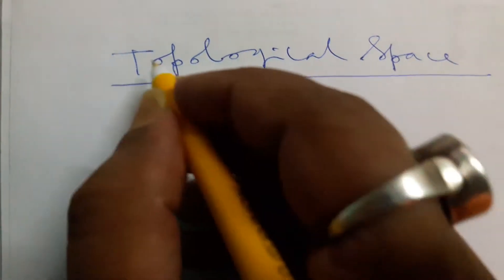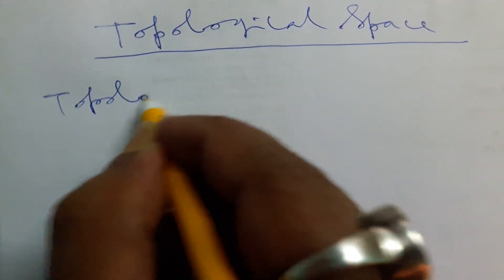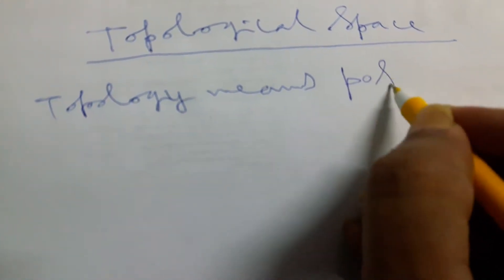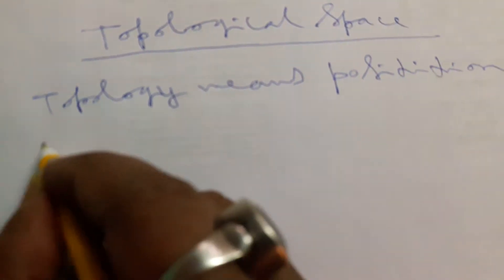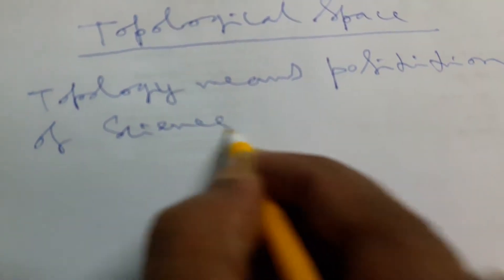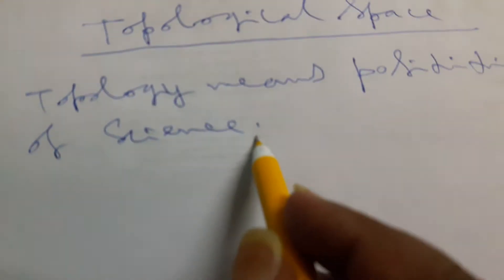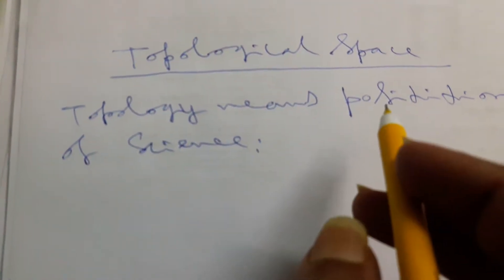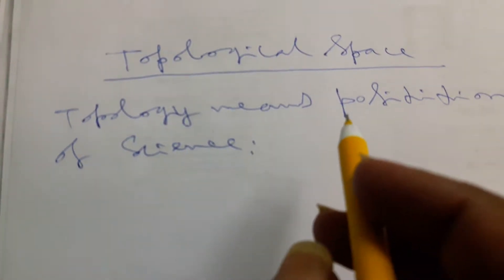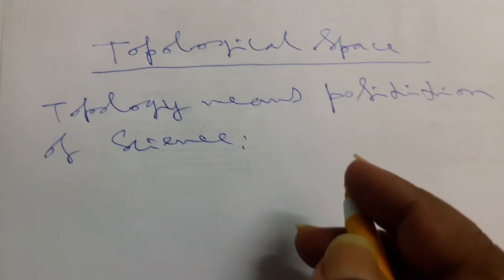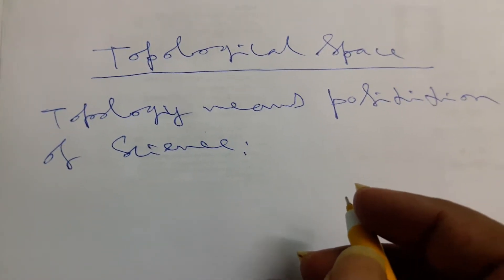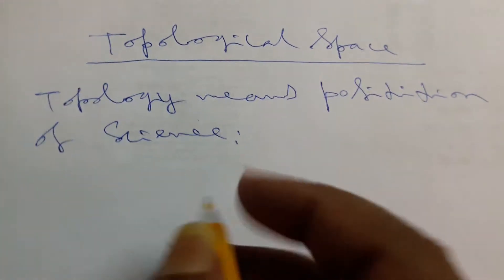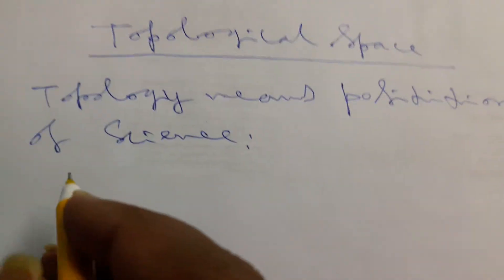First we get the idea of topology. Topology means position of signs, but here we only discuss terms related to the set-theoretic approach, that is general topology. The basic things we use are set theory and the definitions of the set. We consider a collection of topologies and we need here the basic definitions of real analysis like open set and closed set.